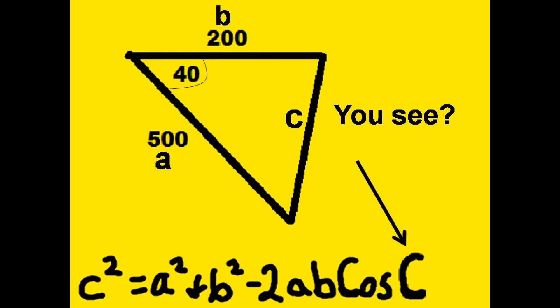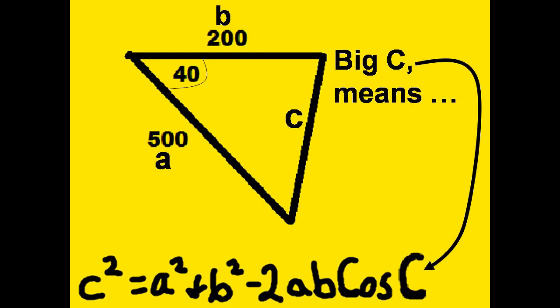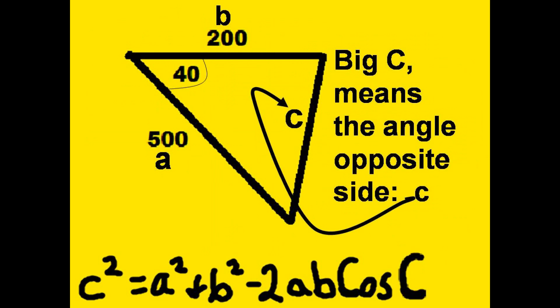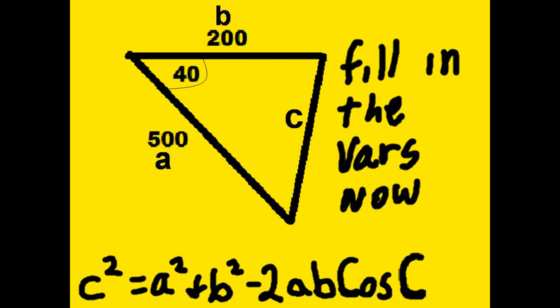You see? It's easy. The big C means the angle opposite side c. We got the equation. Let's fill in the variables now.